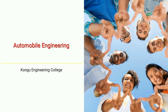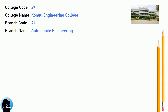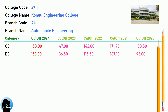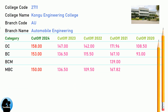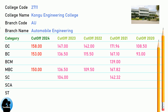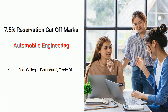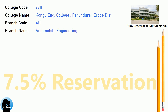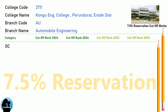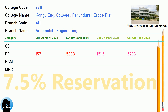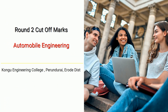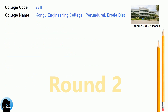DNA cutoff for Kongu Engineering College in Automobile Engineering. DNA 7.5 reservation cutoff for Kongu Engineering College in Automobile Engineering. DNA cutoff for Kongu Engineering College in Automobile Engineering.